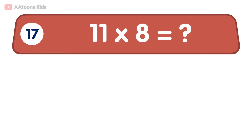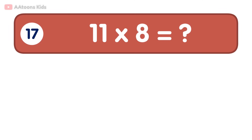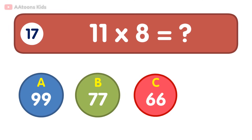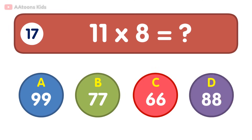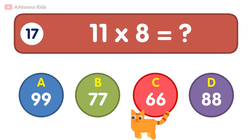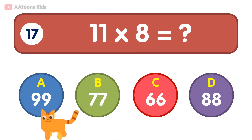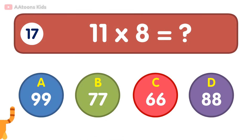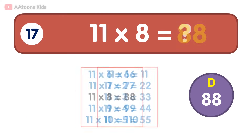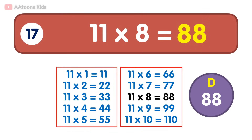21 times 8 is equal to 168. 21 times 5 is equal to 105. 21 times 5 is 105. 22 times 6 is equal to...